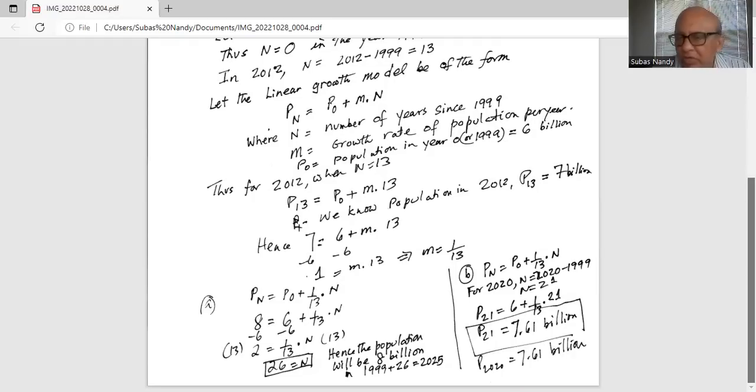So we know already P0 is 6. I'm leaving out the billions. So P21 equals 6 plus 1 over 13 times 21. So P21 is 6 plus 21 over 13, which works out to be 7.61 billion. Hence, the population in the year 2020 is 7.61 billion.